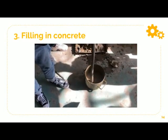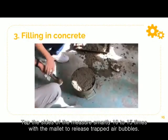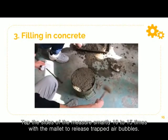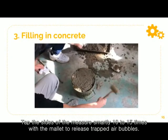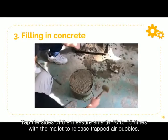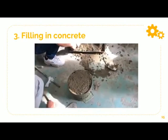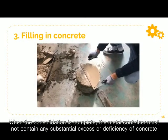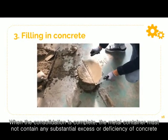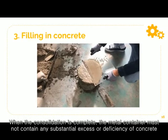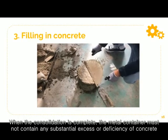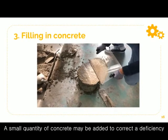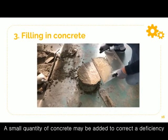Tap the sides of the container smartly 10 to 15 times with the mallet to release trapped air bubbles. When the consolidation is complete, the metal container must not contain any substantial excess or deficiency of concrete. A small quantity of concrete may be added to correct a deficiency.